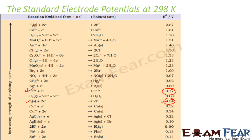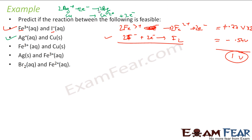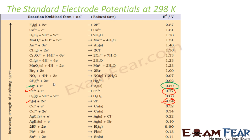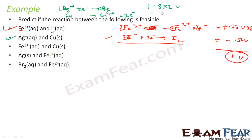From the chart: Ag⁺ to Ag is 0.8 V, so multiplied by 2 gives 1.6 V positive. For Cu to Cu²⁺, the value is minus 0.34 V. Adding these: 1.6 − 0.34 gives a positive number, so this reaction is also feasible.